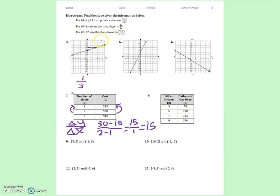For numbers 9 through 12, you're using the slope formula. If it helps you, you can label these ordered pairs as x1, y1, x2, y2. And then you're just plugging everything into the formula.